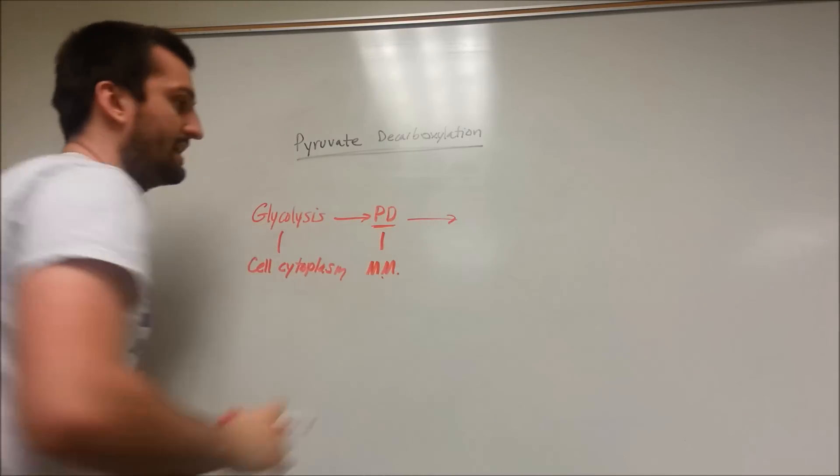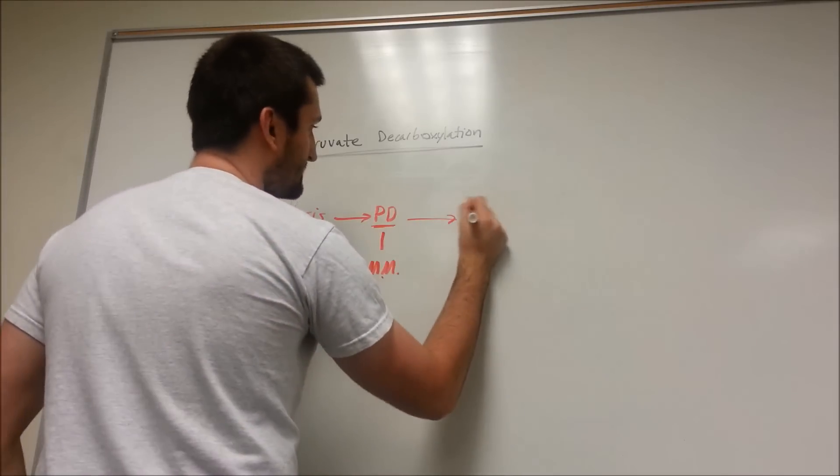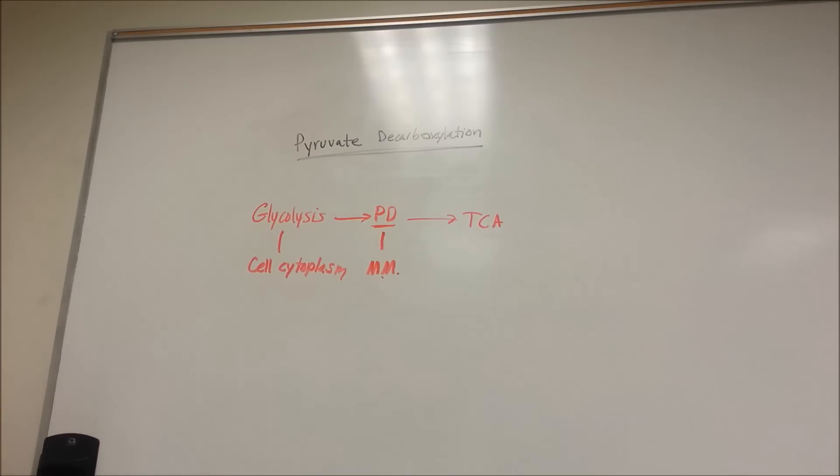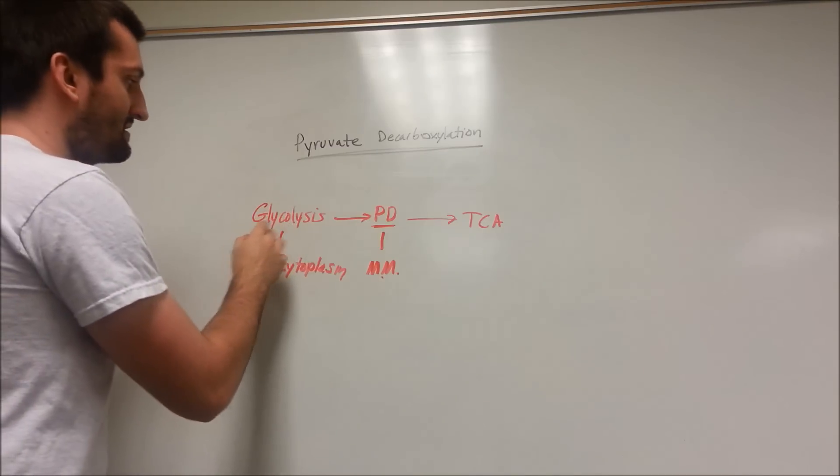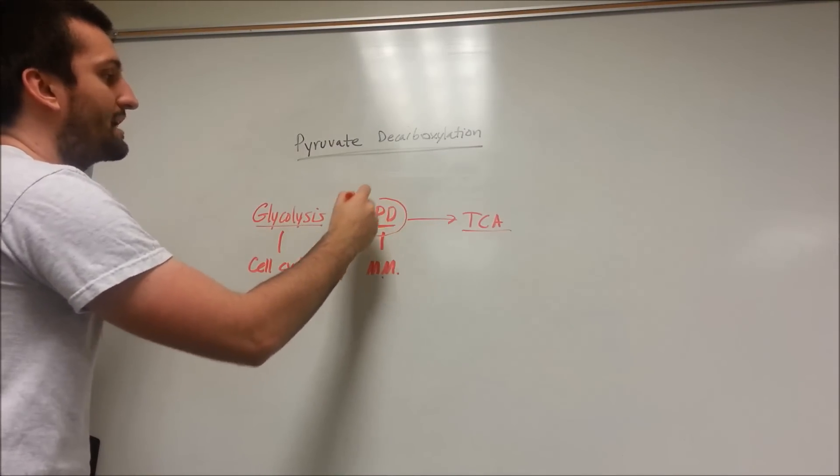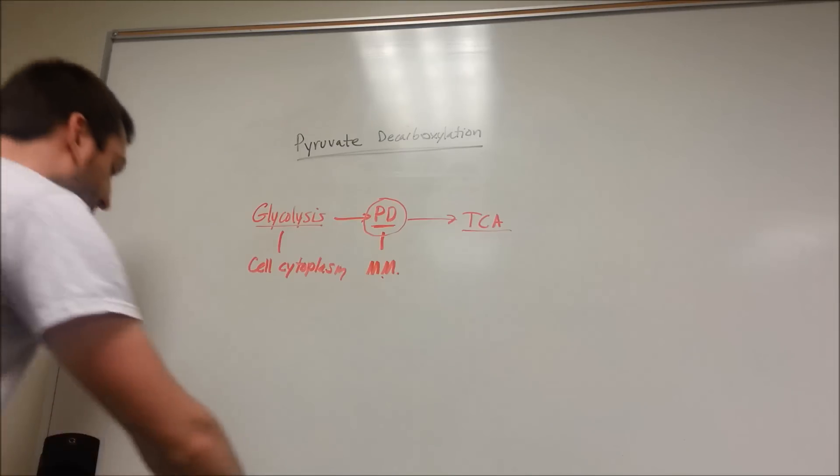And then from there, we're going to spit out an acetyl-CoA molecule. And that's going to enter into the TCA cycle, also called the Krebs cycle. And we'll talk about that next. However, right now, the stuff that spans glycolysis and TCA is going to be the important pyruvate decarboxylation reaction. So let's talk about what it is.